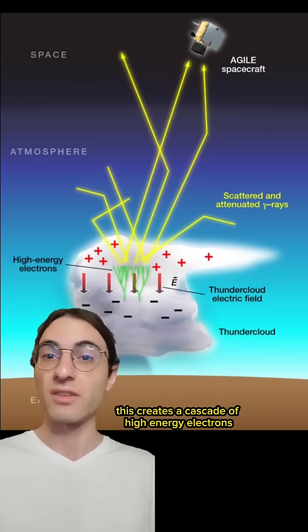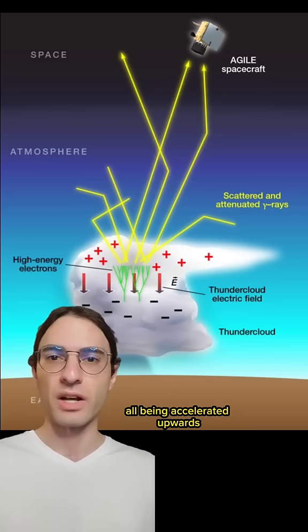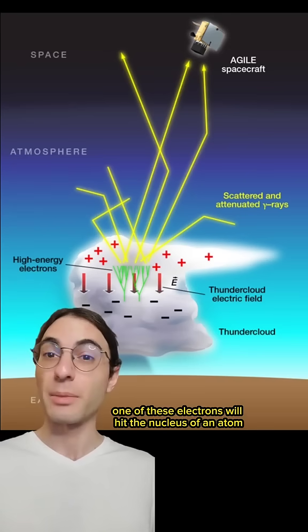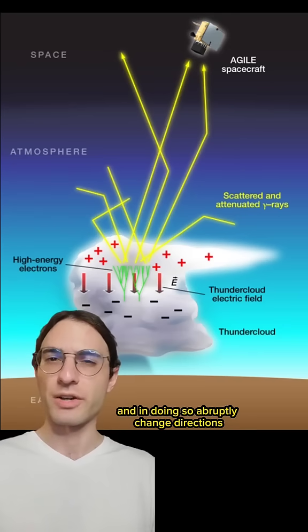This creates a cascade of high-energy electrons all being accelerated upwards—an avalanche. Now, occasionally, one of these electrons will hit the nucleus of an atom, and in doing so, abruptly change directions.